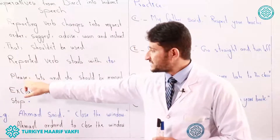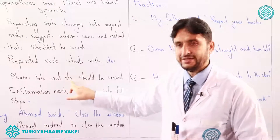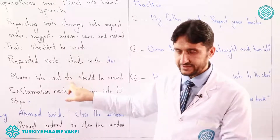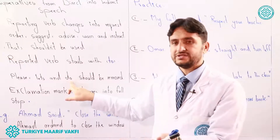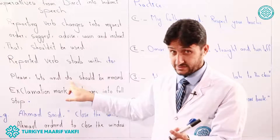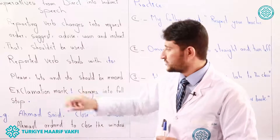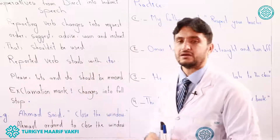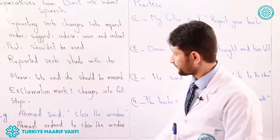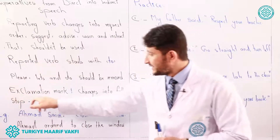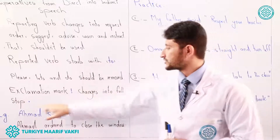The fourth rule: the words 'please,' 'let's,' and 'do' are deleted. In a positive imperative like 'Come to the class,' versus a negative imperative like 'Don't come to the class late,' the word 'do' is also deleted when you change to indirect speech. The fifth rule: the exclamation mark changes into a full stop.